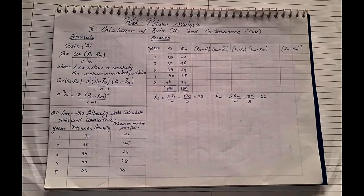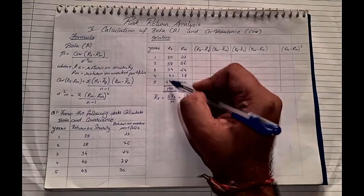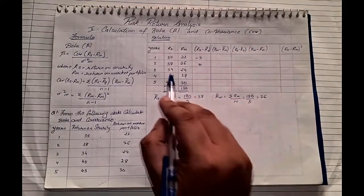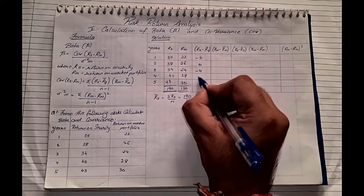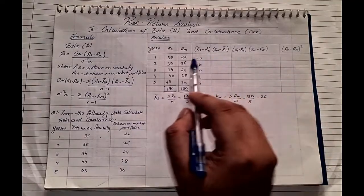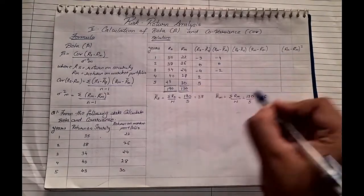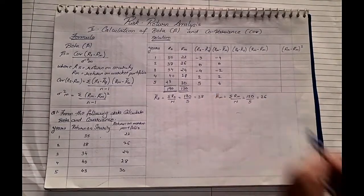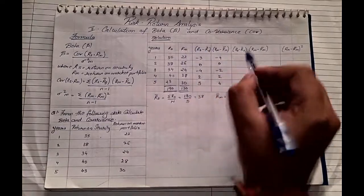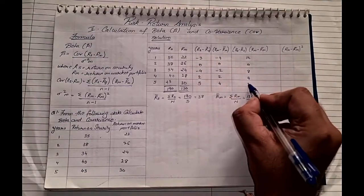Now we fill the next column: rs minus r̄s, subtracting the average from each security return. So 35 minus 38 is negative 3, 38 minus 38 is 0, 34 minus 38 is negative 4, 40 minus 38 is positive 2, and 43 minus 38 is positive 5. Similarly for the market: 22 minus 26 is negative 4, 26 minus 26 is 0, 24 minus 26 is negative 2, then positive 2, and lastly positive 4. The product column gives: negative 3 times negative 4 is 12, 0, negative 4 times negative 2 is 8, 2 times 2 is 4, and 5 times 4 is 20.